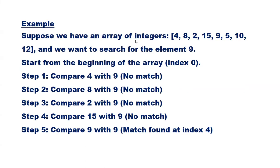Suppose we have an array of integers: 4, 8, 2, 15, 9, 5, 10, 12. We want to search for element 9. We start from the beginning of the array, that is at index 0. At index 0, the value is 4. For step 1, compare 4 with 9 — it is not a match.